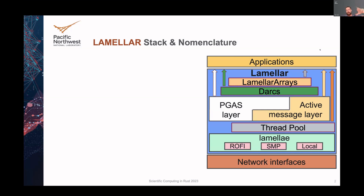At the top we have the user applications, and then below that we have the Lamellar runtime where we expose different types of APIs. We have some high-level APIs in the form of Lamellar arrays — think of those as distributed arrays. Those are built upon extensions to atomic reference counters that we've called DARCs. Sitting on top of that, we have both a PGAS — a global address space and a partitioned global address space — and then an active message layer that helps to drive all the communication and execution of remote tasks in the runtime. Below that we have the thread pool for executing our asynchronous tasks, then the Lamellar layer, which is really the interface between the network fabrics and the upper levels of the runtime.